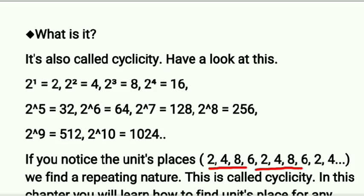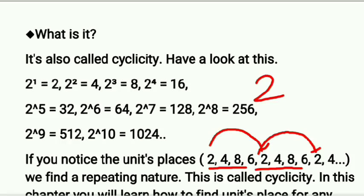The digit 2 repeats after every 4 powers. So we say that the cyclicity of 2 is 4. Cyclicity of 2^n, whatever the power is, is 4. That is what cyclicity means.